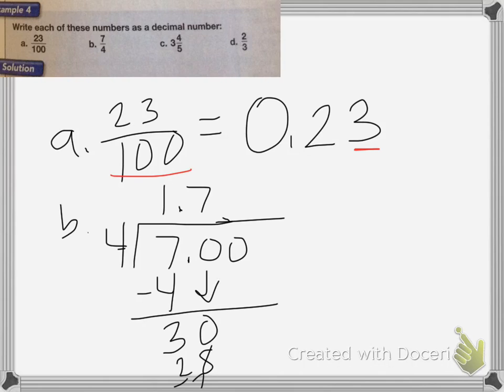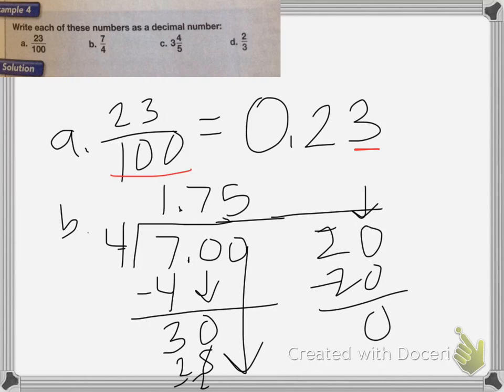4 goes into 30, 7 times, that's 28. Don't forget your decimal. That's 2 left over, I'm going to bring it over here, 2 left over, bring down the 0. 4 goes into 20 5 times, which is 20. So my answer for this one is 1.75.